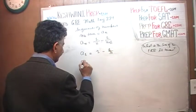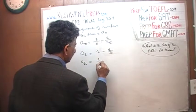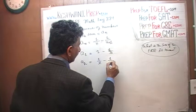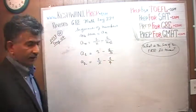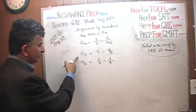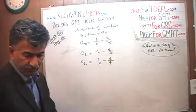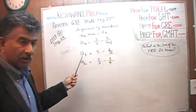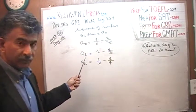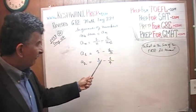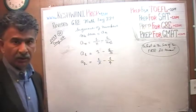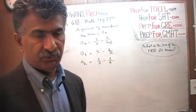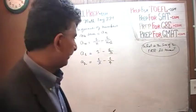The second term is 1/2 minus 1/(2+2), which is 1/2 minus 1/4. As you can see, if you were to add the first term and second term, nothing would cancel. The sum of the first two terms is 1 + 1/2 − 1/3 − 1/4 — you'd have to add all four quantities, and that's not the point. We're looking for some pattern here. Let's do one more.